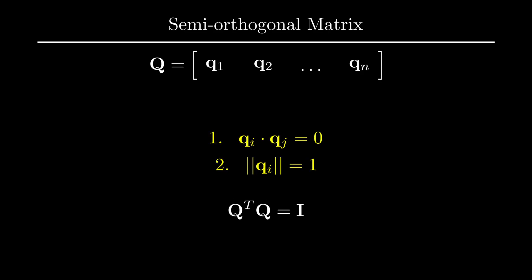Now note that if our Q matrix happens to be square, we would simply call it an orthogonal matrix instead of a semi-orthogonal matrix. However, sometimes in these factorizations, we can actually get Q matrices that are rectangular, and that's why we call them semi-orthogonal instead of orthogonal.